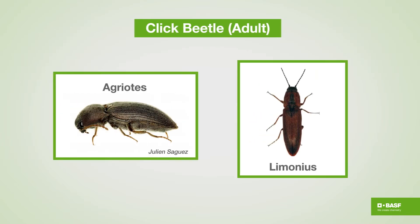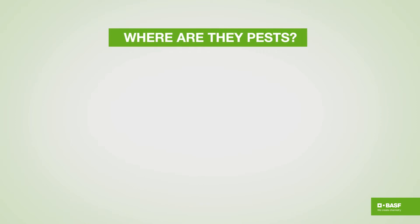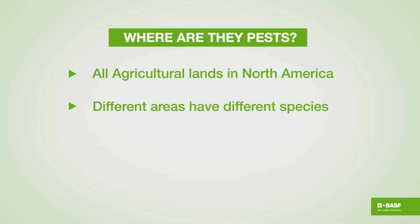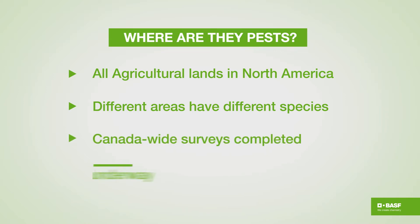They don't stay ugly forever. They eventually molt and turn into these nice looking beetles called click beetles. So where are they pests? They're basically in all agricultural lands in North America. Different areas going from west to east have different species. We've done surveys in Canada and there are surveys in the U.S. to find out what species are where and who's causing the problems.